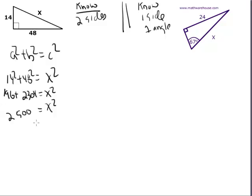And if you take the square root of that, you're going to get 50. Alright, so x = √2500 or 50.